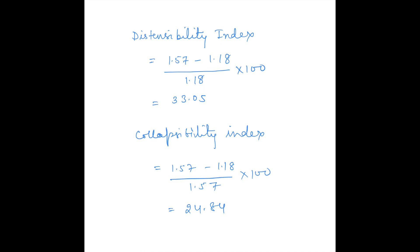If the patient is on mechanical ventilation, calculate the distensibility index; if spontaneously breathing, calculate the collapsibility index. The cutoff value for the distensibility index is 18% and for the collapsibility index is 50%. If the value exceeds these thresholds, the patient is considered fluid-responsive.